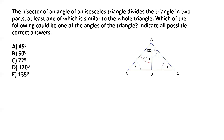From the similarity condition, angle ABD must equal angle BAD, so we can write x equals 90 minus x. Solving for x, we get x equals 45. So 45 degrees seems to be one of the correct answers. But we haven't considered all possible cases yet — we've only considered the case where the bisector belongs to the unequal angle of the triangle.